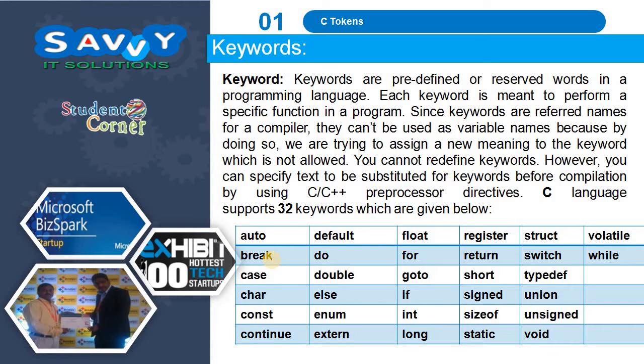You cannot redefine keywords. However, you can specify text to be substituted for keywords before compilation by using the C or C++ preprocessor. C language supports 32 keywords which are given below.